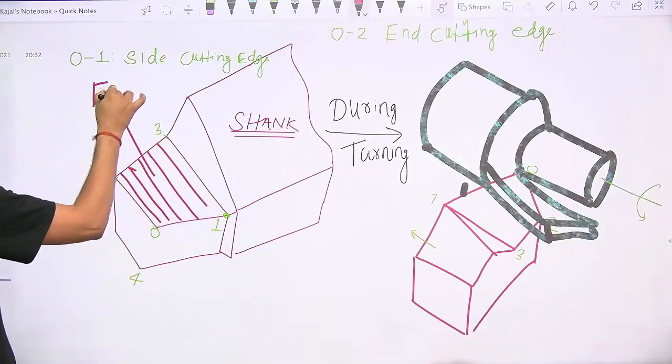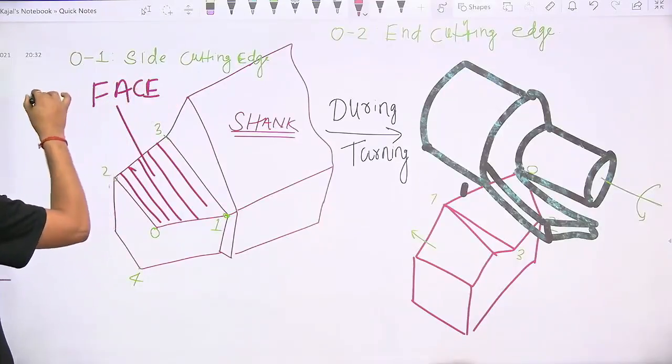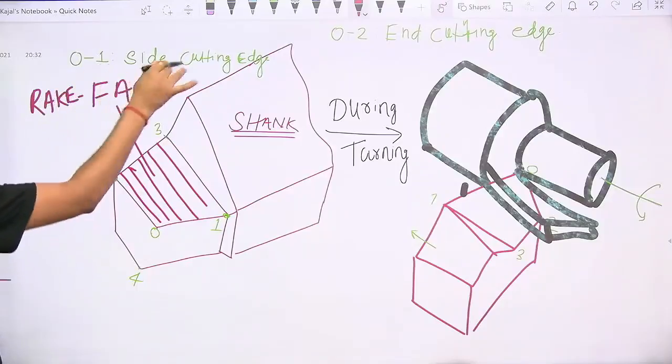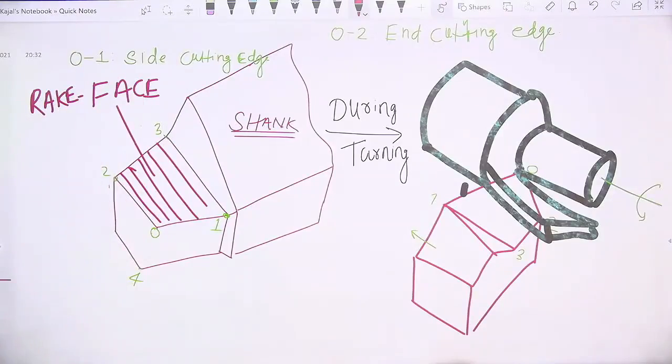This is what we call as rake face of the tool, or simply face of the tool. Now, here there are two more surfaces as you can see. One surface is there.